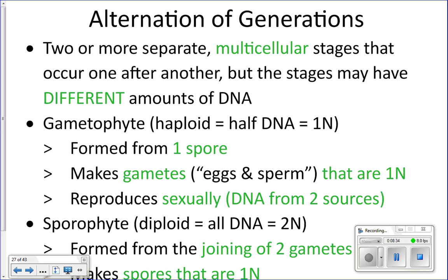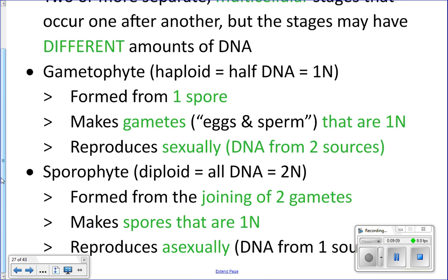The gametophyte stage is haploid (1n — one set of DNA) and the sporophyte stage is diploid (2n — two sets of DNA). These are the two alternating stages in the life cycle.